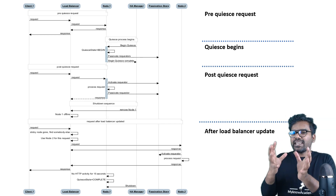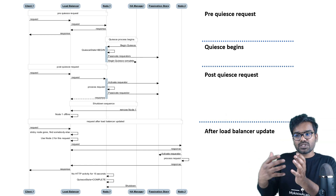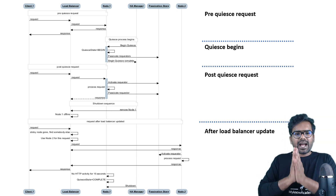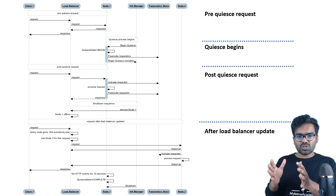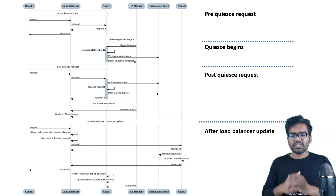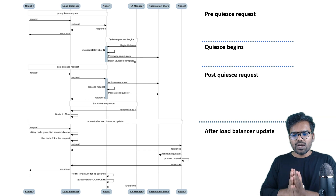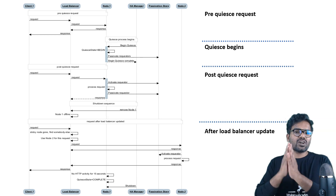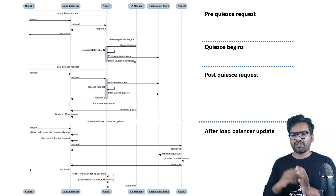Cluster management helps with high availability because you have different servers running, and if one server goes down you can continue the session on the next server — so high availability is always maintained. You also have access groups through which you can act as a high availability manager, controlling and starting the quiesce process. The high availability manager is another participant, and then you have the passivation store — which we saw during the passivation lecture. Data can be passivated to either the DB or the file system, so the passivation store is also a participant.